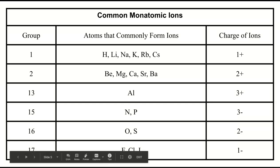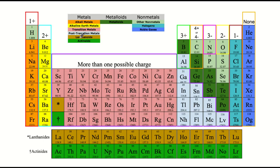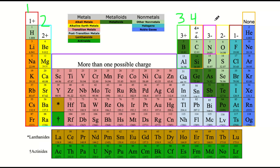Now instead of memorizing this list, we are actually going to be using the periodic table to identify and remember what the charges of the elements are. So if you remember back to when we talked about valence electrons, we talked about how you have 1, 2, skip a few, 3, 4, 5, 6, 7, 8.